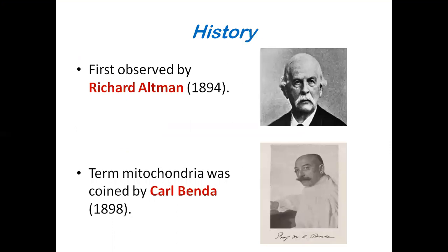This is the short history of mitochondria. Richard Altman was the scientist who observed mitochondria for the first time in the year 1894. And the term mitochondria was coined by Karl Benda in the year 1898.